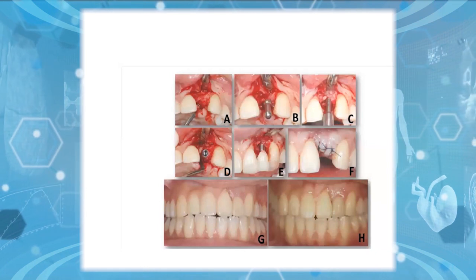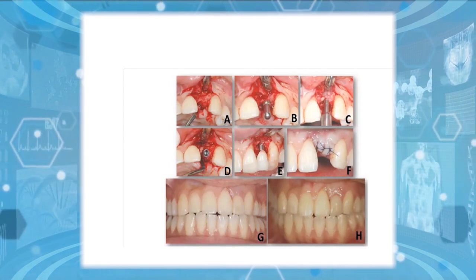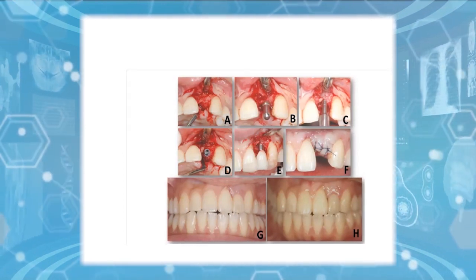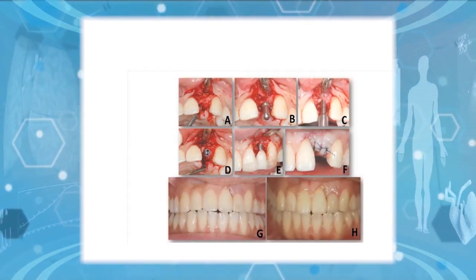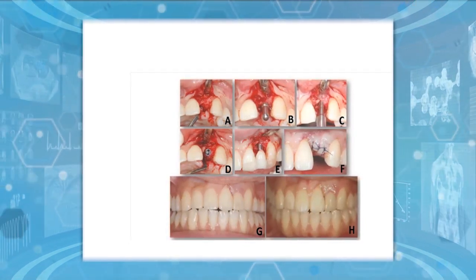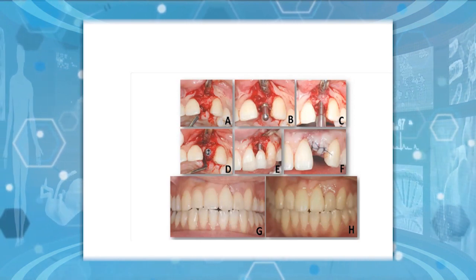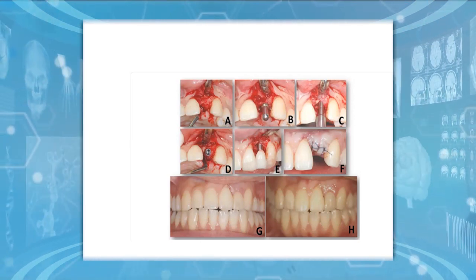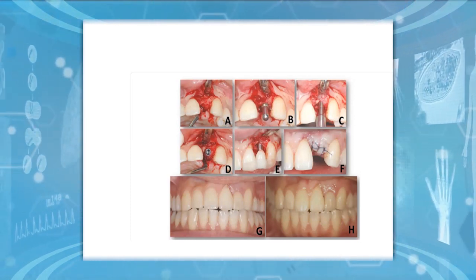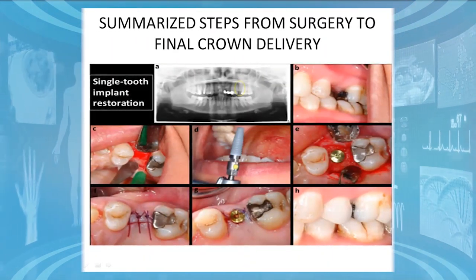The summarized surgical steps are as follows: A — soft tissue exposure; B — initial drill into the bone; C — expansion of the drills; D — implant placed into the prepared osteotomy; E — temporary crown placement; F — soft tissue stabilized by sutures to prevent food debris from contacting the implant; and H — delivery of the final crown.